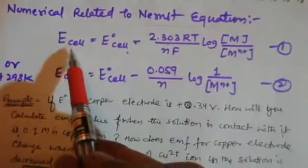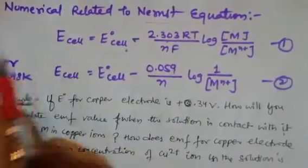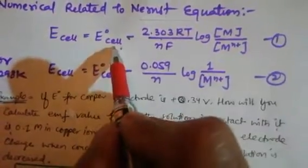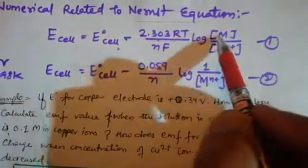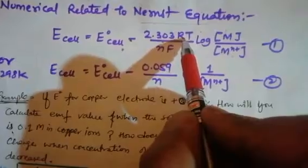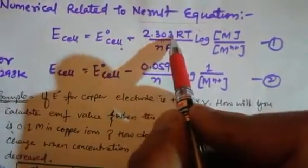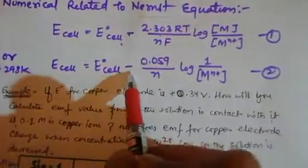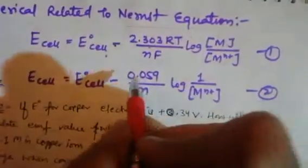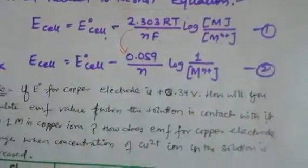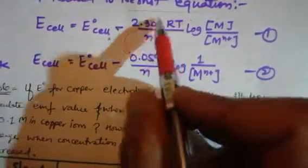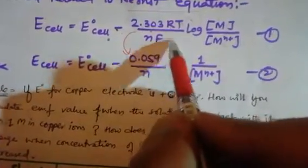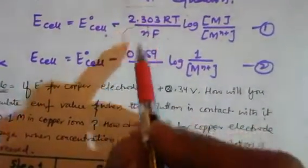Regarding the Nernst equation: we are now calculating EMF (electromotive force) of the cell, not just standard cell potential. EMF is calculated as: E_cell = E°_cell − (2.303RT/nF) × log([M]/[M⁺]). Here R is the gas constant, T is temperature, n is number of electrons, and F is Faraday's constant. At 298 K, after substituting universal constants (R = 8.314, F ≈ 96500), this simplifies to: E_cell = E°_cell − (0.0592/n) × log(1/[M_n⁺]).